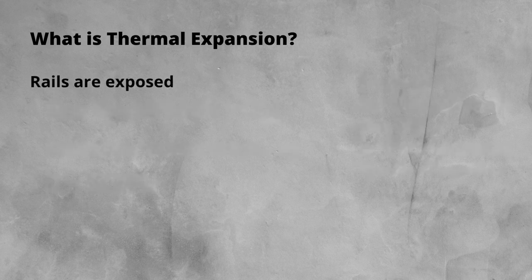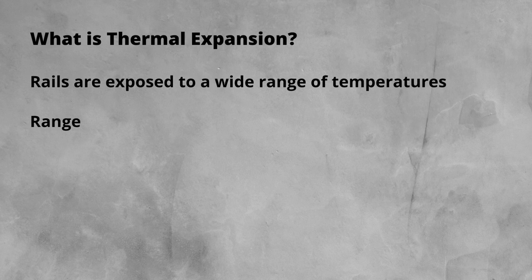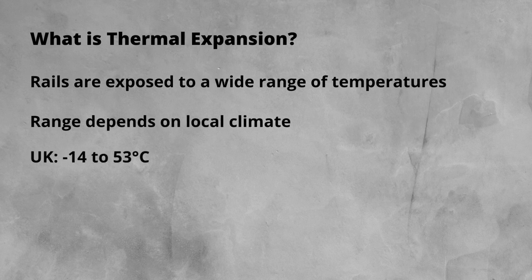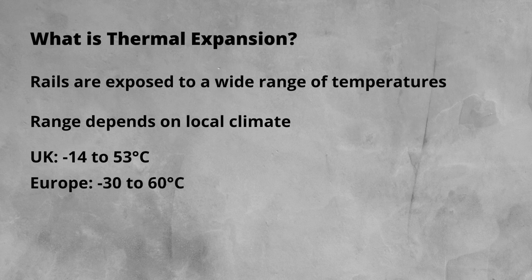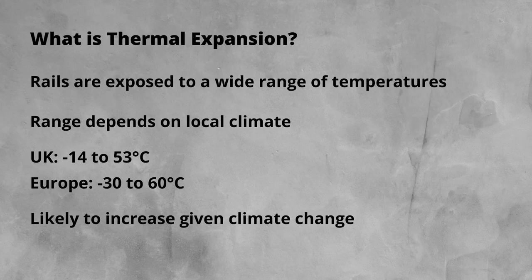Also, bear in mind the range of temperatures that rails will be exposed to. This is all relative to the local climate. Take the UK — the temperature range considered to be standard is minus 14 degrees up to 53 degrees. Within continental Europe, this can be pushed minus 30 to 60 degrees. It's worth noting that these ranges are likely to increase, given the move towards more extreme weather being driven by climate change.